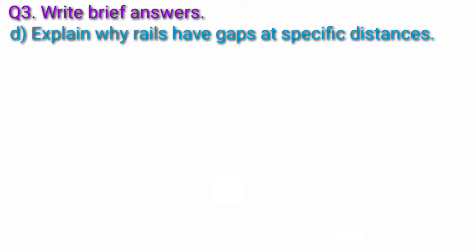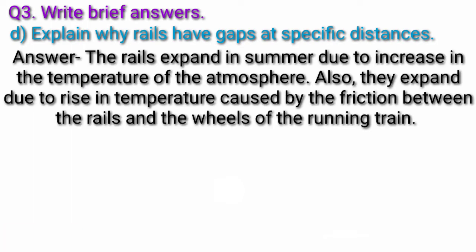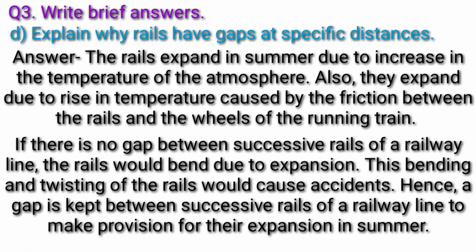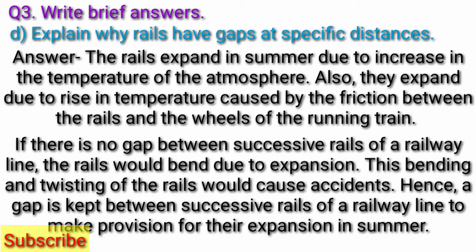Question 3D: Explain why rails have gaps at specific distances. Answer: The rails expand in summer due to increase in the temperature of the atmosphere. Also, they expand due to rise in temperature caused by the friction between the rails and the wheels of the running train. If there is no gap between successive rails of a railway line, the rails would bend due to expansion. This bending and twisting of the rails would cause accidents. Hence, a gap is kept between successive rails to make provision for their expansion in summer.